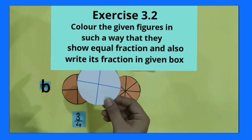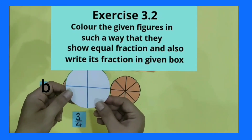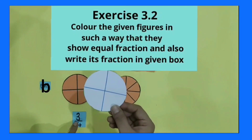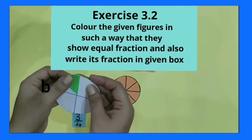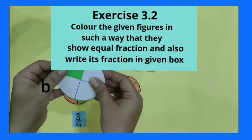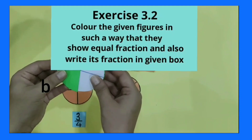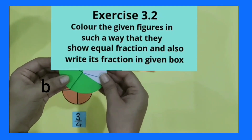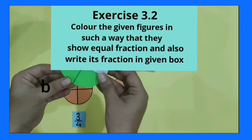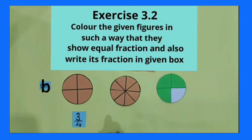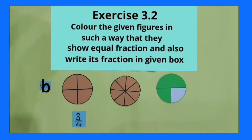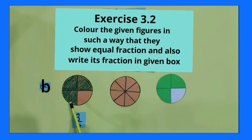This is a circular shape divided into four equal parts. Now I color three parts out of four equal parts. You saw I have colored three parts out of four equal parts, and now its fraction is three by four. I have colored three parts out of four equal parts.